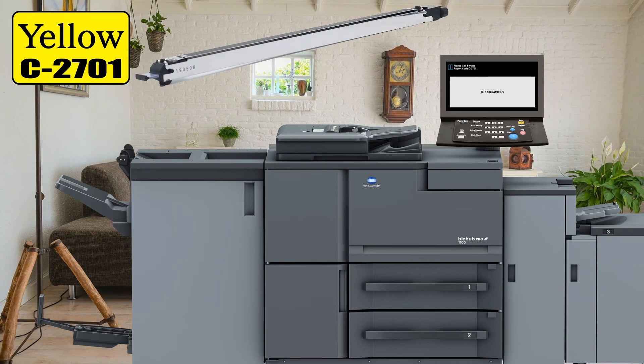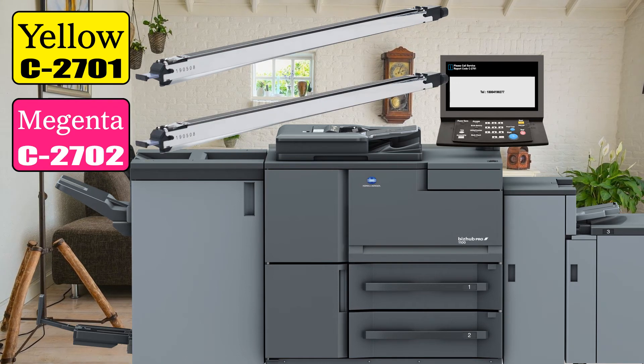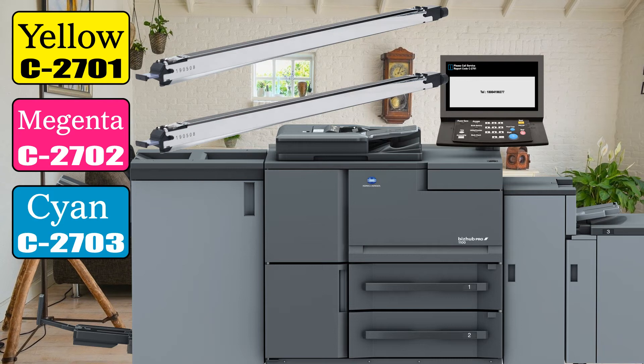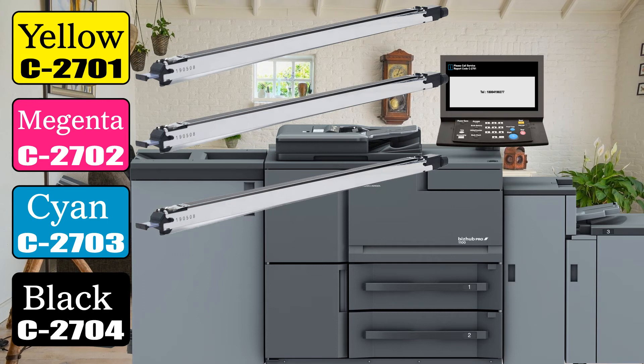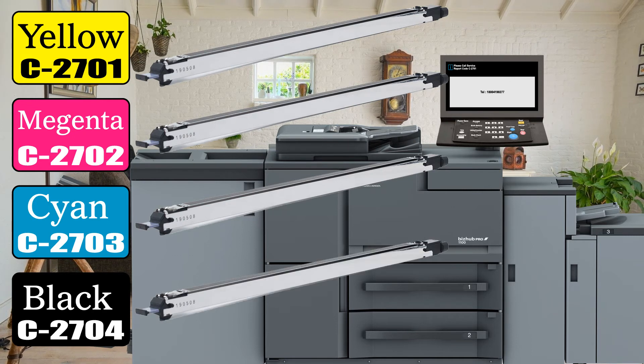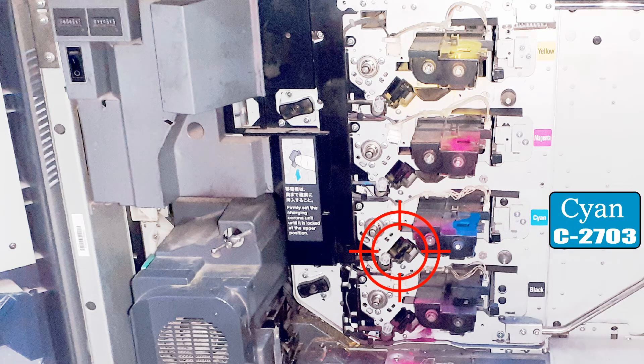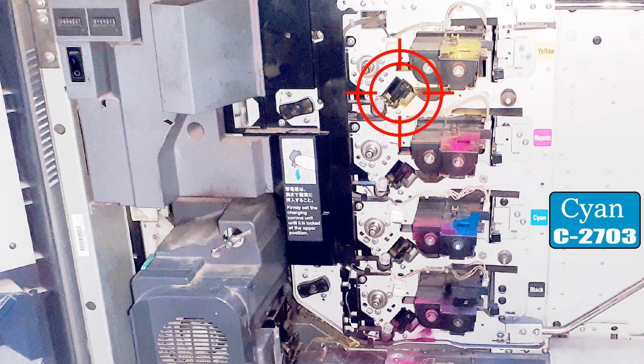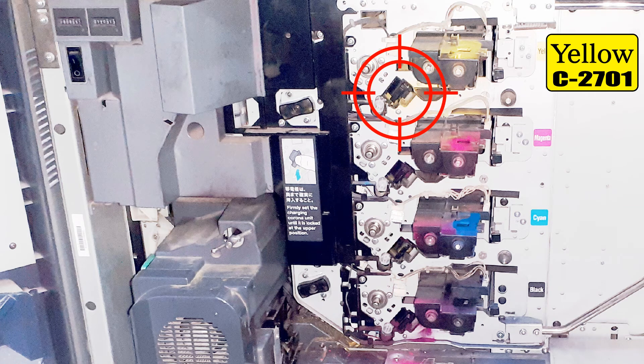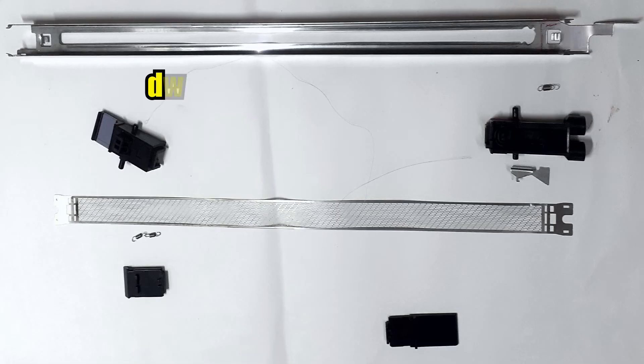Error code 2701 ka matlab yellow corona unit kharab hai, 2702 ka matlab magenta, 2703 ka matlab cyan, aur 2704 ka matlab black charging unit kharab hai. Agar machine error code 2703 dikha raha hai toh hum cyan charging unit ko yellow charging unit se badal denge aur machine ko restart karenge. Yadi error code 2701 mein badal jata hai, toh iska matlab yellow wali corona unit kharab hai.